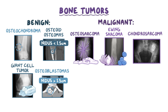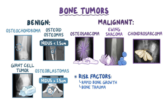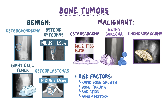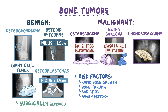Chondrosarcoma has large multinucleated chondrocytes and a moth-eaten appearance on x-ray. There are no known causes of bone tumors, but among risk factors we have rapid bone growth, bone trauma, exposure to radiation, and positive family history of bone tumors. Osteosarcoma is linked to RB1 and TP53 gene mutations, while Ewing sarcoma is associated with EWSR1 and FLI1 gene mutations. Benign tumors can be surgically removed if they're causing symptoms, while malignant tumors require radiotherapy, chemotherapy, and surgery.